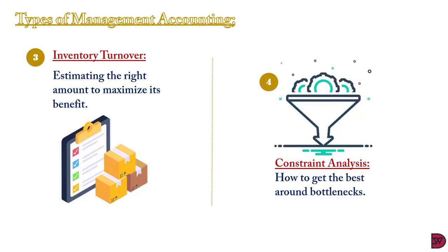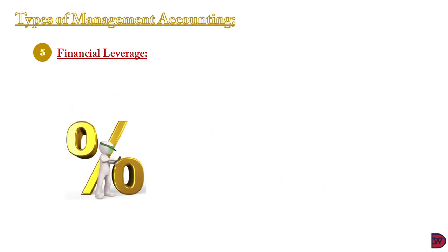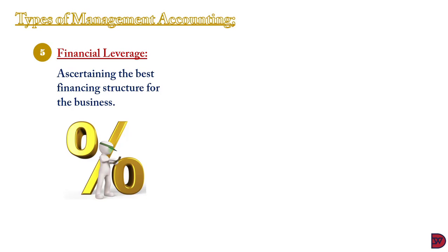The fourth type is constraint analysis. Every business has constraints or bottlenecks — it can be the demand for its products, availability of raw materials, challenges with suppliers or customers, or seeking funds. Knowing one's bottleneck can inform the business to plan and make optimum benefit from the existing situation.